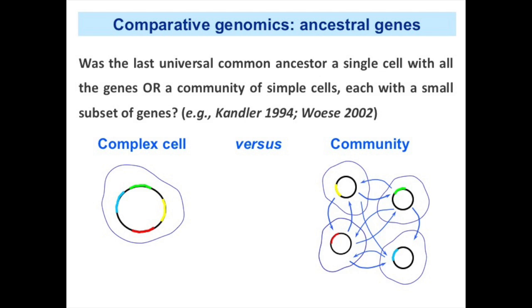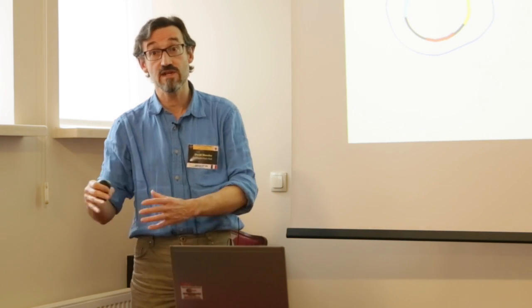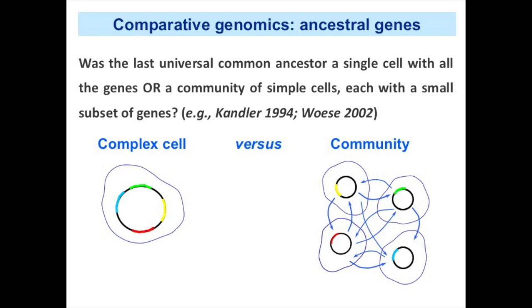I think this is also a problematic view. If you have two cells interacting — one able to synthesize one half of the ribosome, the other the other half — the whole community may have complete ribosomes, but each individual cell has only part of what is needed to synthesize proteins. This problem applies to all metabolic pathways: for a cell to function, it necessarily must have complete pathways.